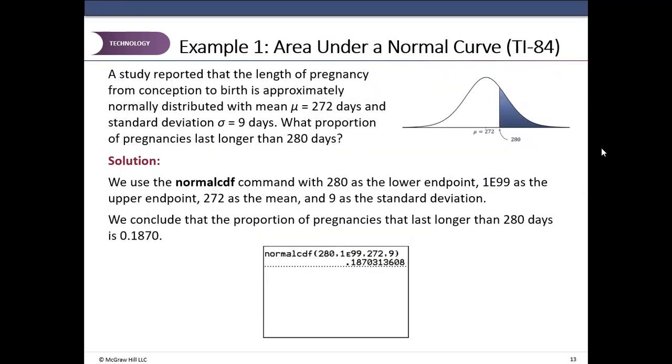So a study reported that the length of pregnancy from conception to birth is approximately normally distributed with mean 272 days and standard deviation of 9 days. What proportion of pregnancies last longer than 280? Notice 280, the number x, is greater than the mean. So it's on the right of the mean. Further we want proportion of pregnancies more than 280 days. So we are on the right of 280. So we go to second vars, go down to number two. We start from 280. That is my lower boundary, lower bound.